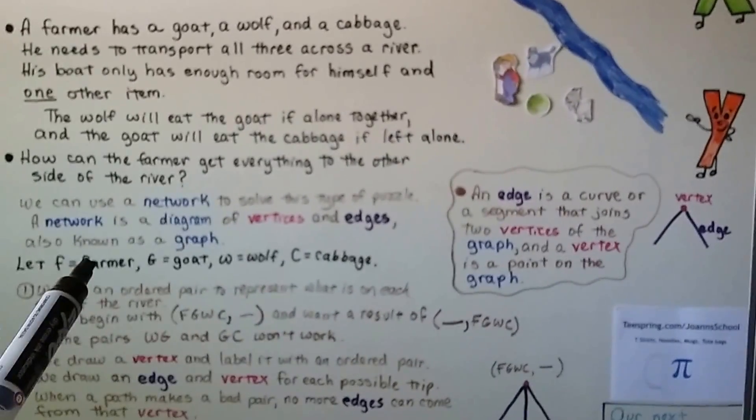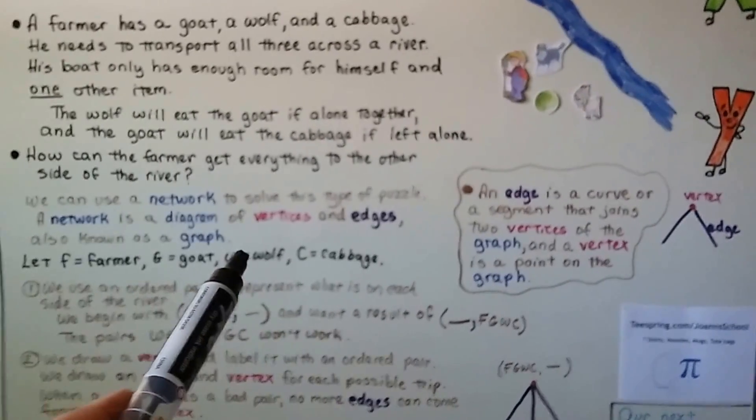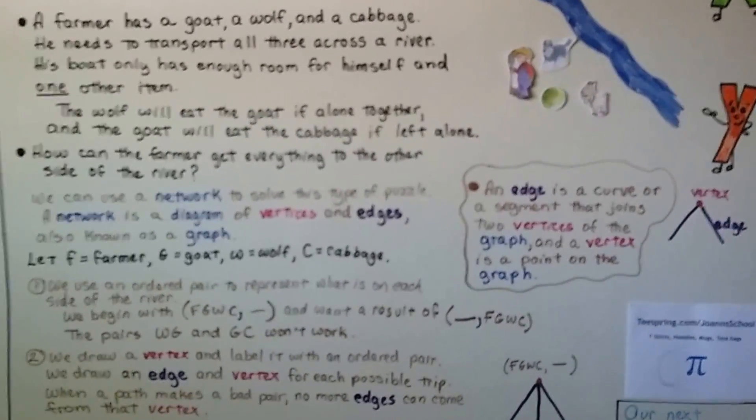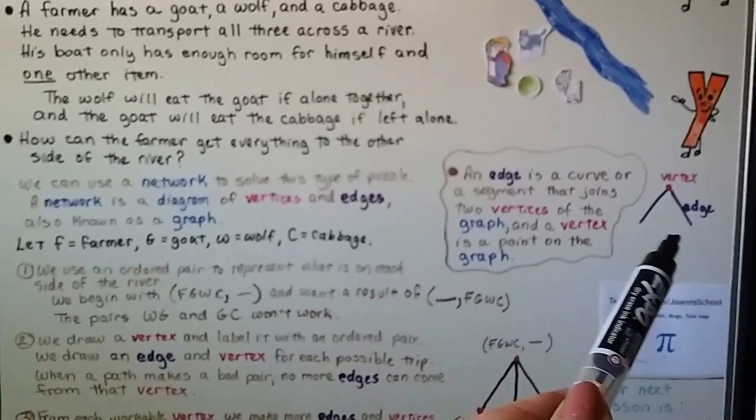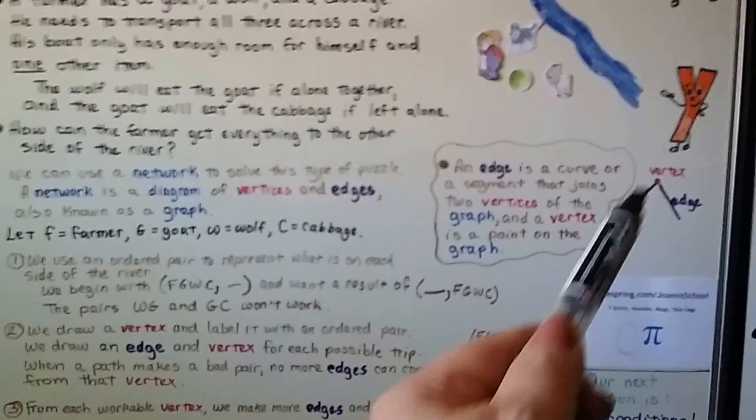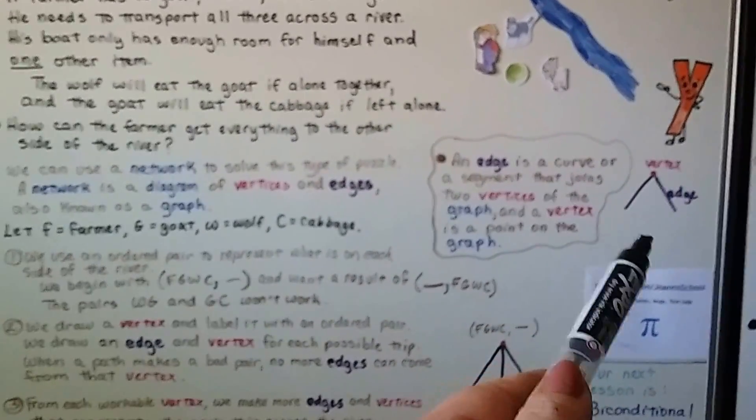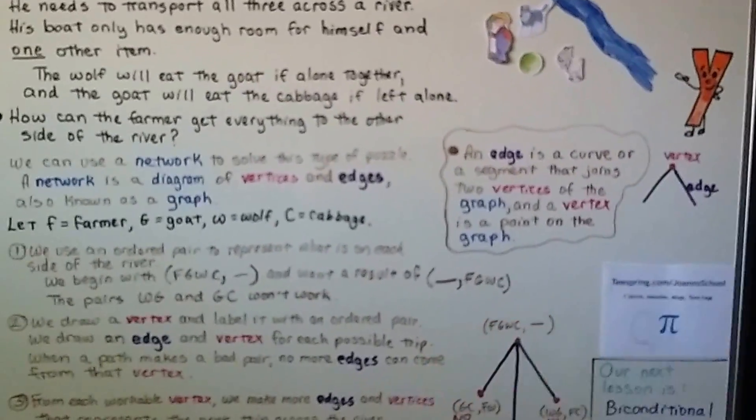We're going to let F be the farmer, G is going to equal the goat, W is going to equal the wolf, and C is going to equal the cabbage. An edge is a curve or segment that joins two vertices of the graph, and a vertex is a point on the graph.